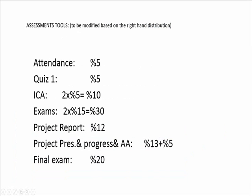How your final grade is evaluated is detailed here. Quiz 1 is going to be a multiple choice exam. There are two in-class assignments, two exams, and a final exam. The project and academic activity is totally 30% of your final grade. The details of how to do your project and academic activity are posted to your Moodle in the project and academic activity folder.